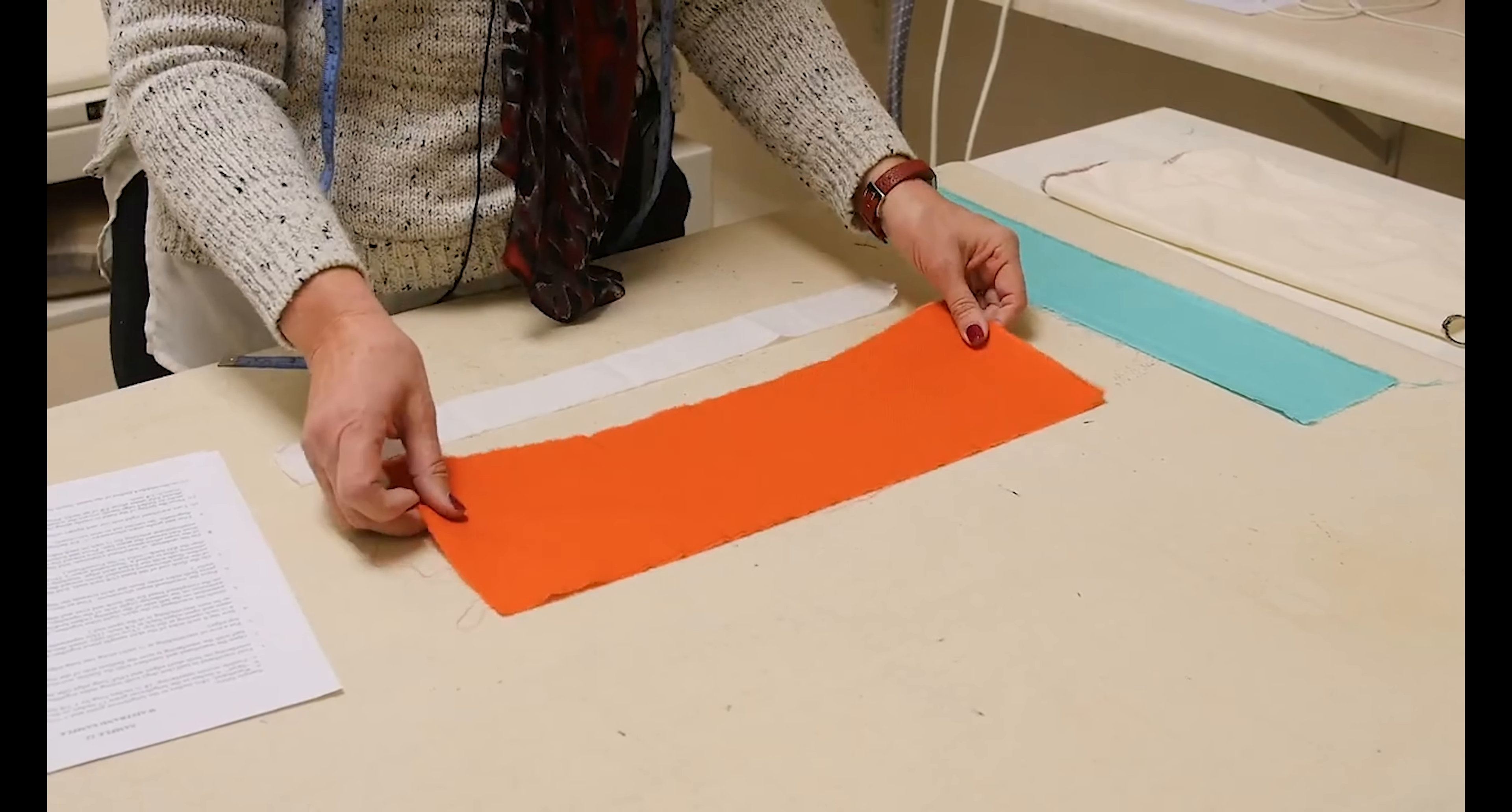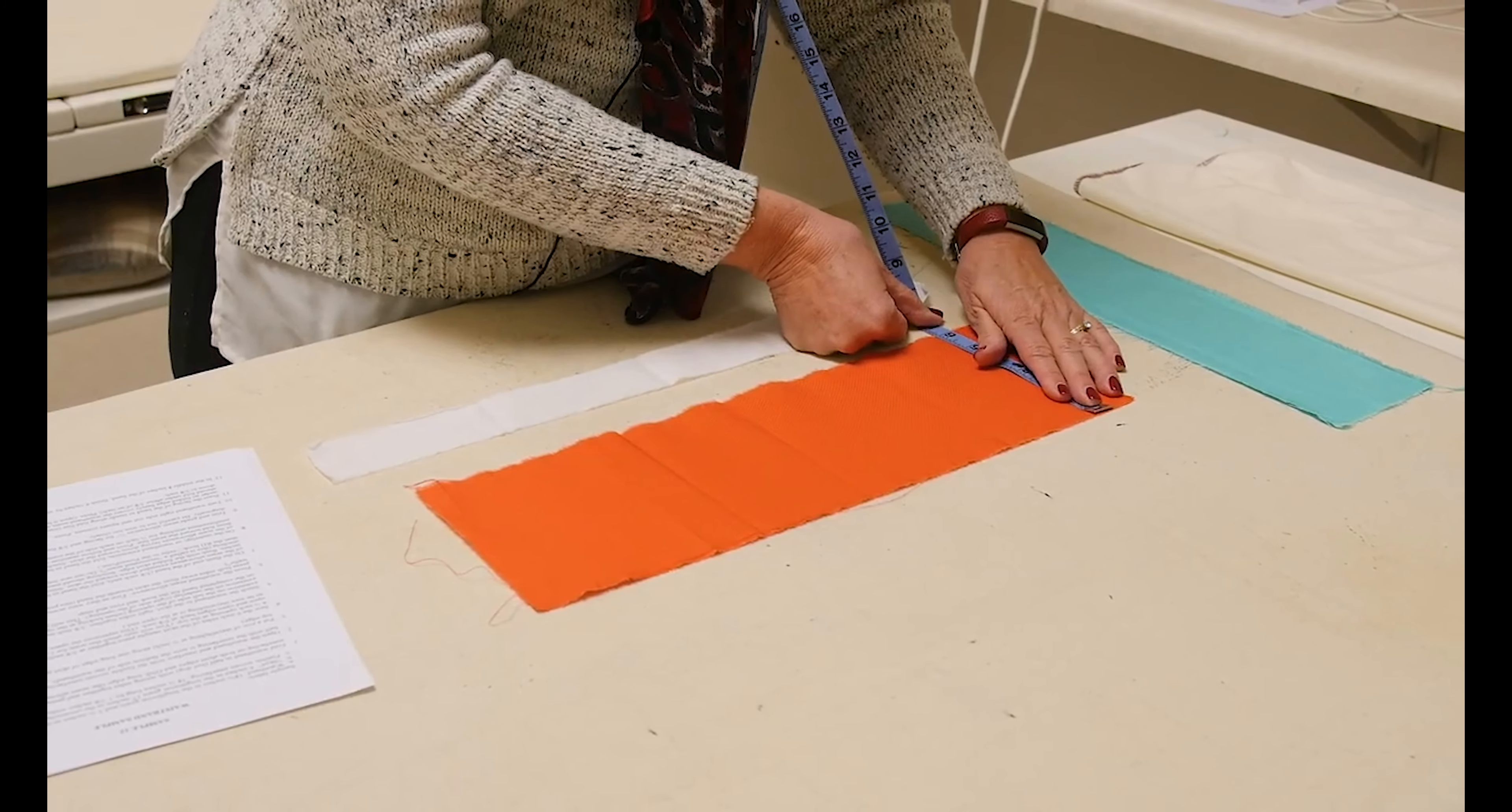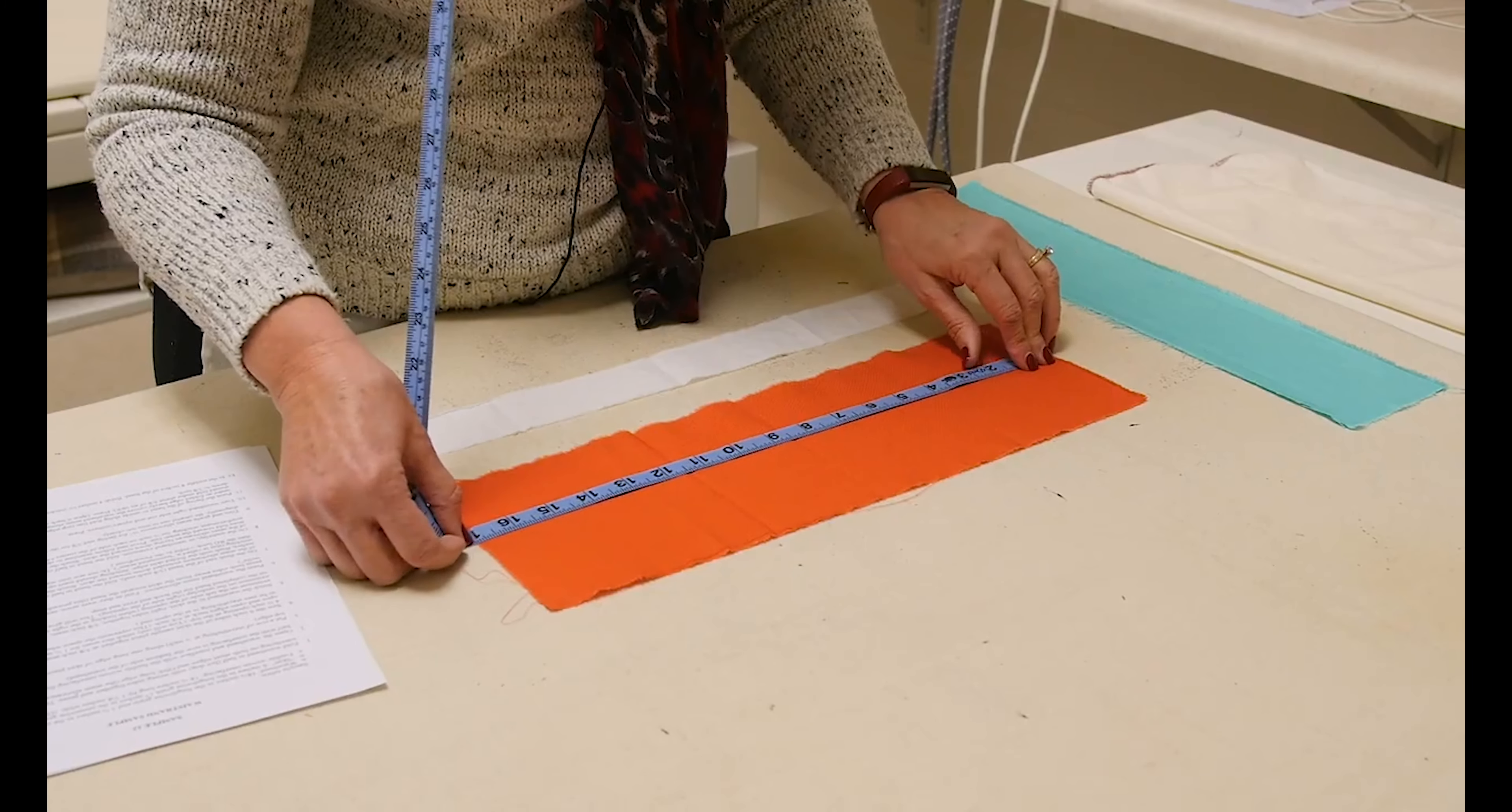And then for the skirt, we're just going to do six inches in the lengthwise grain. So I've got my selvage right here. So there's my six inches. And then this is going to be 17 inches. So there's my six by 17.